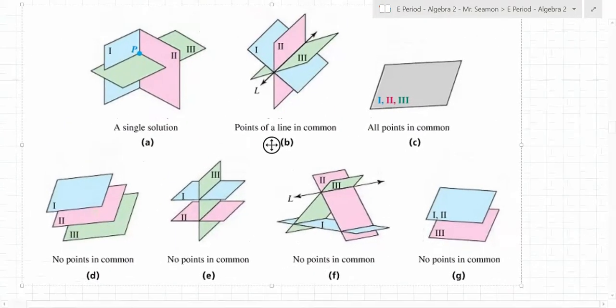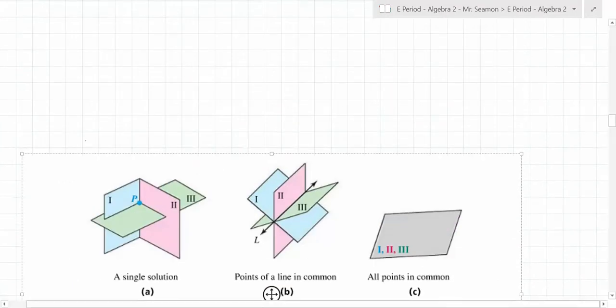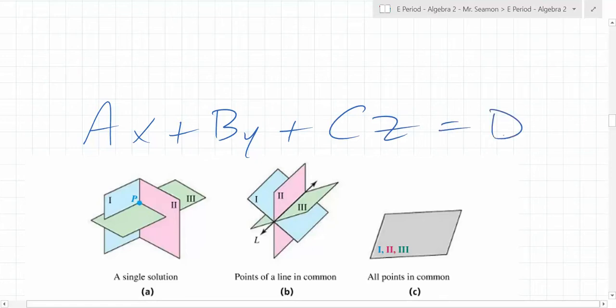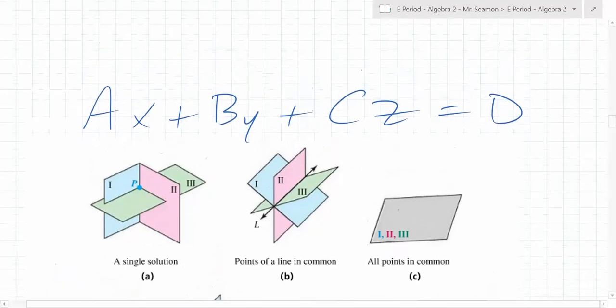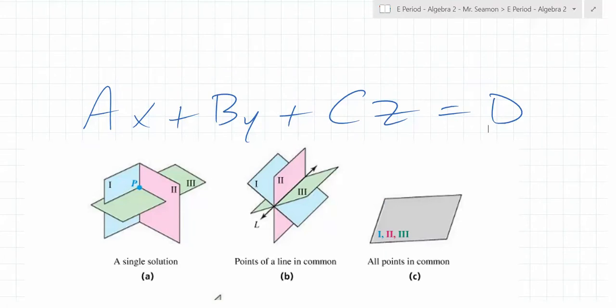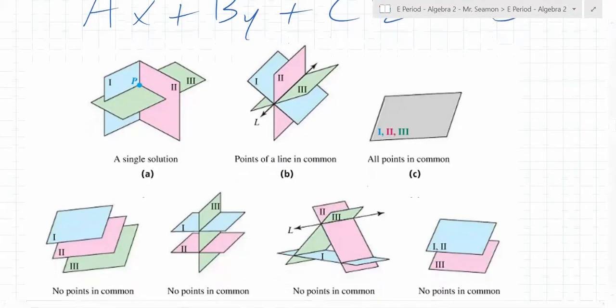When you graph ax plus by plus cz equals d, where a, b, c, and d are real numbers, these are not going to be lines — each of them is going to be a plane. Is drawing a plane in three-dimensional space easy? Not really. The problem is how many different ways can three planes intersect?